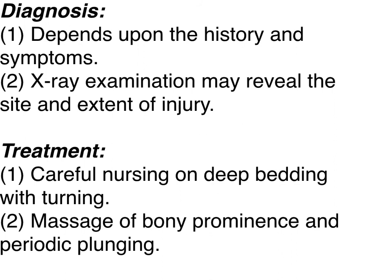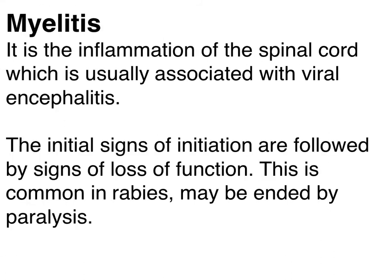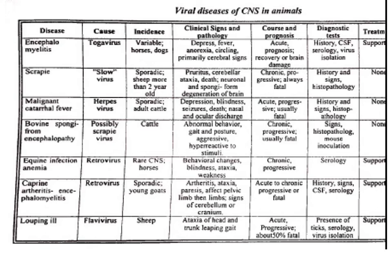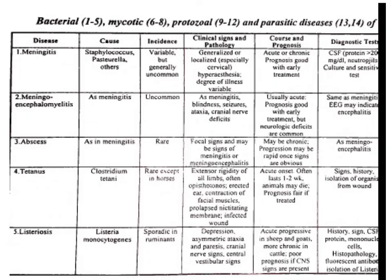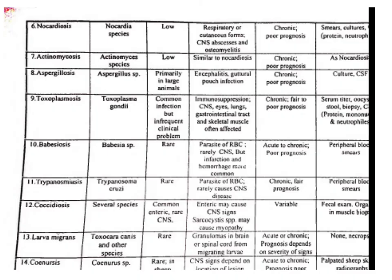Diagnosis depends on history, symptoms, and X-ray. Treatment depends on careful nursing, deep bedding, massage of bony prominences, and periodical turning. The second disease of the spinal cord is myelitis — inflammation of the spinal cord, usually associated with viral encephalitis. Initial signs of irritation are followed by signs of loss of function, which may end in paralysis. This is referenced from the blood and Henderson disease or veterinary medicine textbook covering viral diseases of the cerebrospinal central nervous system in animals.